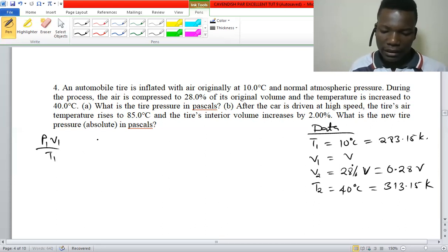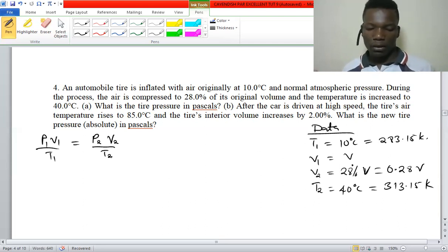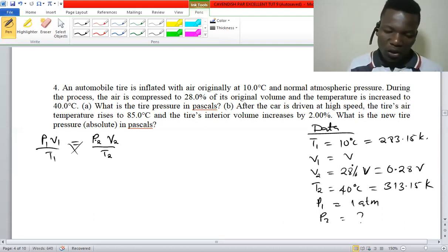We are going to have a general gas equation: P1 V1 over T1 equals P2 V2 over T2. Pressure one is one atmosphere and we are looking for pressure two. The final pressure is going to be P1 V1 T2 over V2 T1.